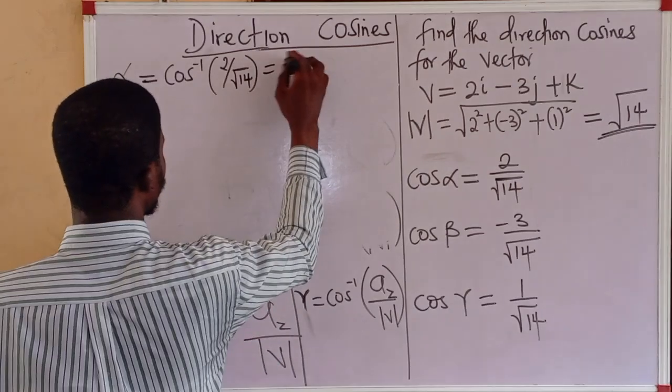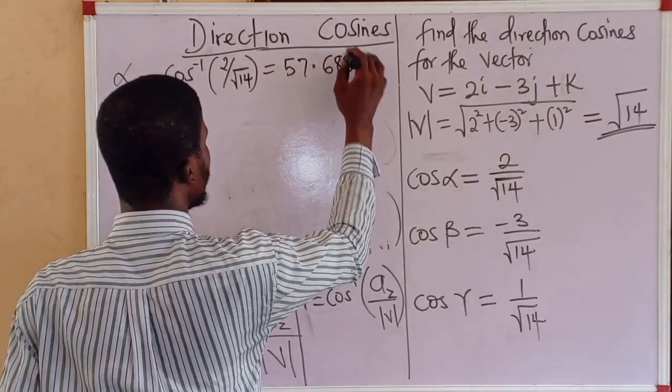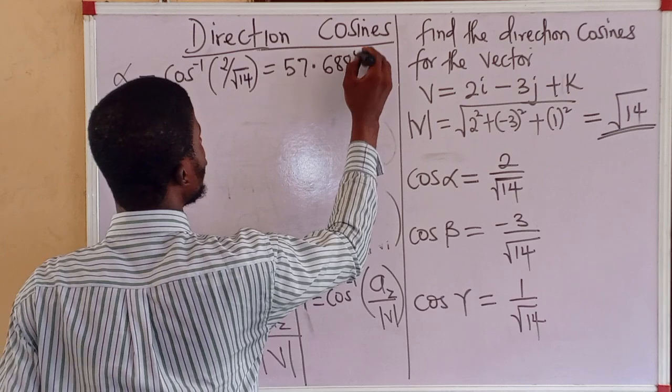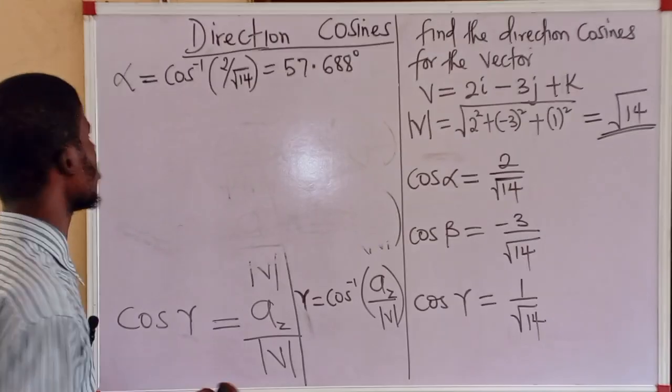And that will be 57.688 degrees to 3 decimal places.